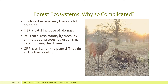Gross primary production, GPP, in this system and all systems is done by plants or producers. They really do all the hard work for an ecosystem because they're the ones harnessing energy from the Sun and converting it into all the biomass we see in the ecosystem. Without them doing that hard work, the other life would not exist.